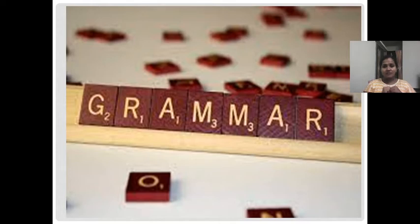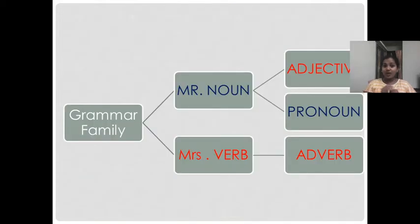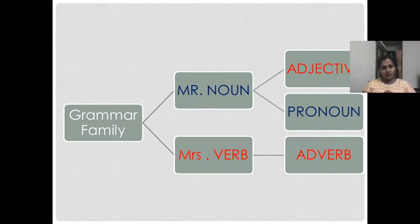We know that a family consists of a few members. Let's see who the members of this family are. Generally in a family we can see a couple along with their children. Here also, in the Grammar family, we have a couple. The name of the husband is Mr. Noun — he is the head of the family. And his wife is Mrs. Verb. So the couple is Mr. Noun and Mrs. Verb, and they are blessed with three children.